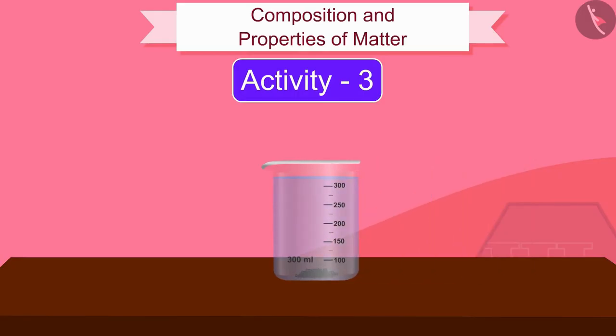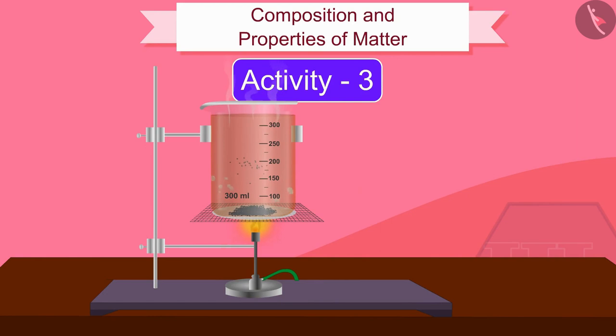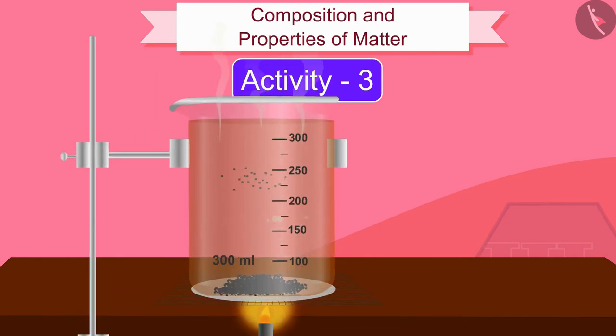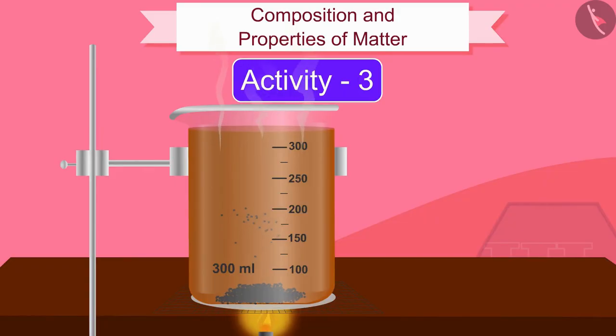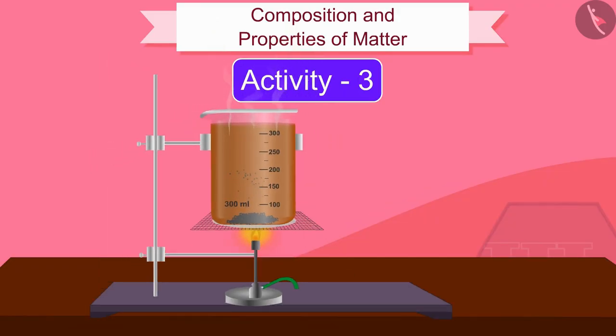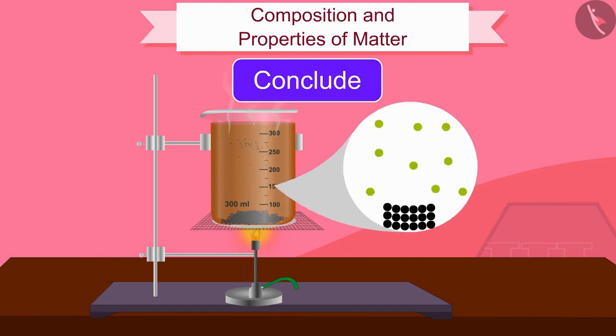We can see that the color of water is changing after some time. Now if you heat this beaker, what do you see? You can see that on heating the beaker, the color of the tea dissolves more rapidly in water. From this activity we can conclude that the particles of matter get intermixed with each other on their own.